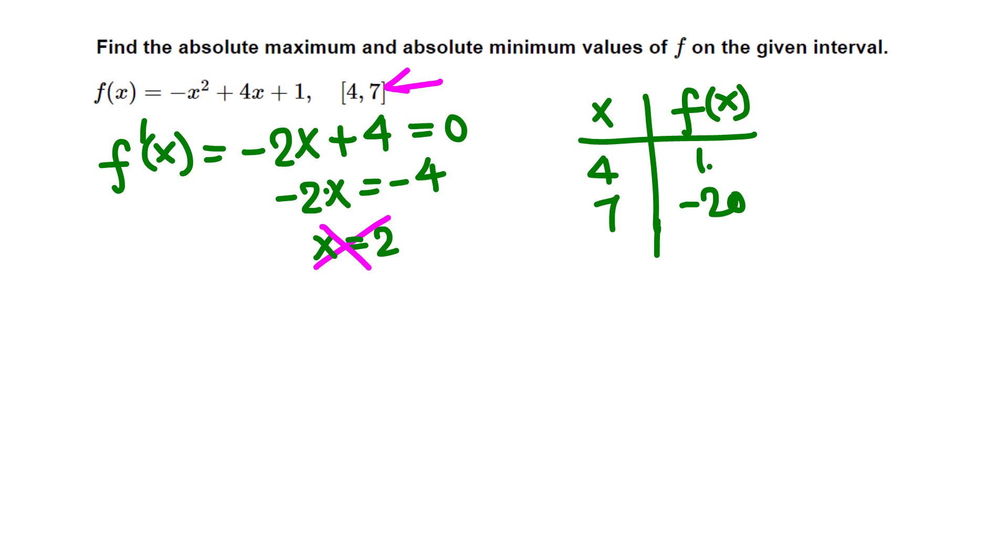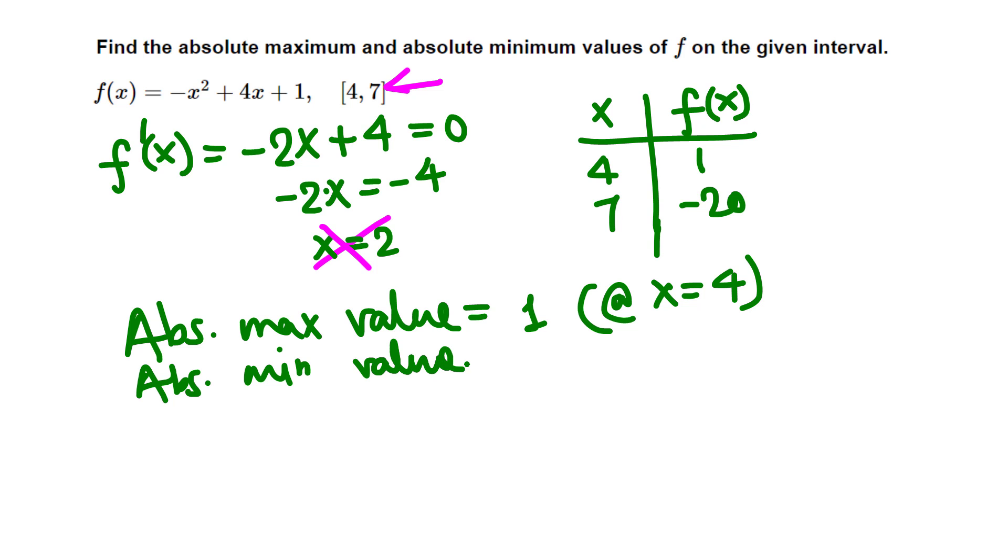So 1 is the absolute maximum value that occurs at x equals 4, and negative 20 is the absolute minimum value that occurs at x equals 7. In this question, the absolute maximum value is 1 at 4, and the absolute minimum value is negative 20 at 7.